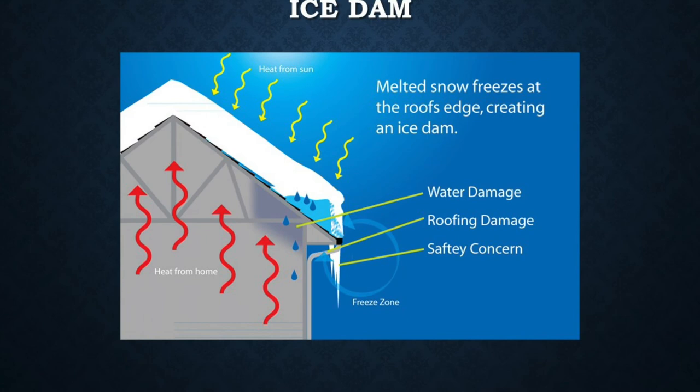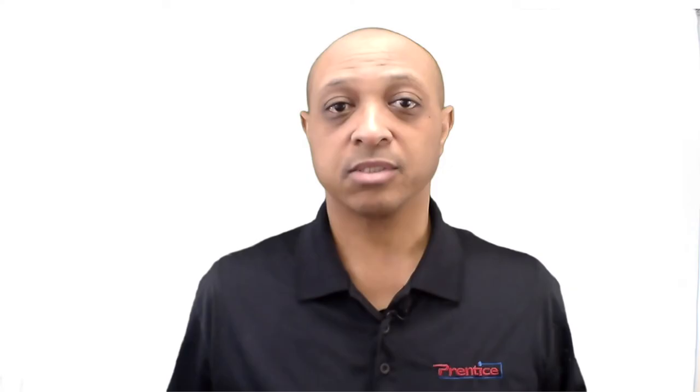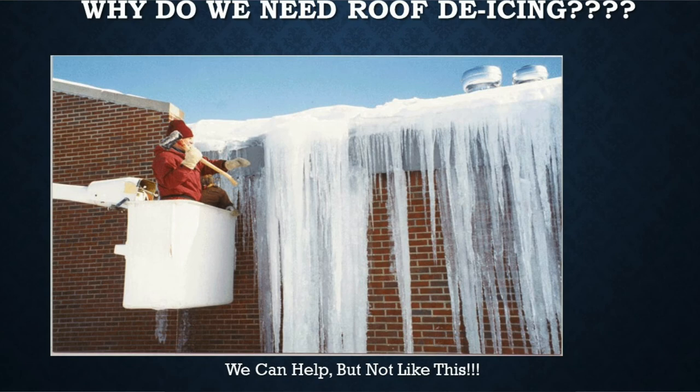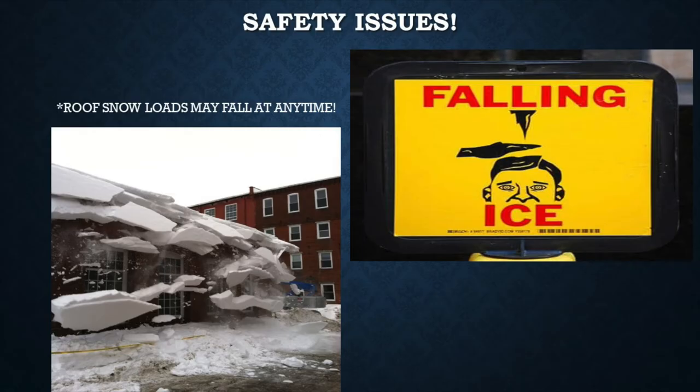When more water trickles down and hits the ice, it goes one of two ways. One way it seeks weak points in the roof, causing leaks into the building. The second way, it continues flowing into the gutter and over the gutter, forming ice dams. Eventually that ice will melt and those icicles can fall down, creating a very dangerous situation for people below.